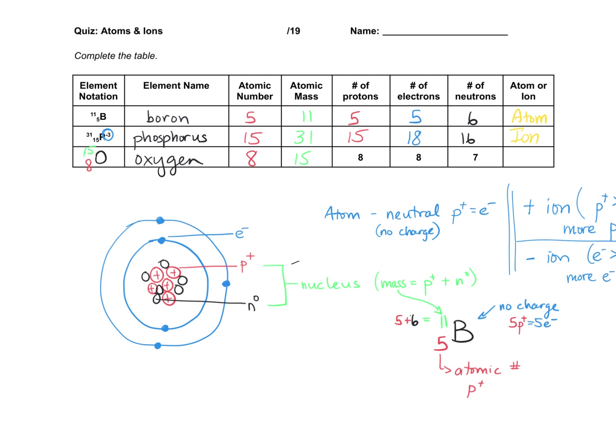Now, is this an atom or an ion? Well, let's check the protons and electrons. Oh, they're the same. So when the protons and electrons are the same, you've got the same positive and the same negative particles. Then there's no charge overall.